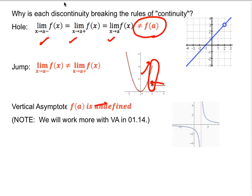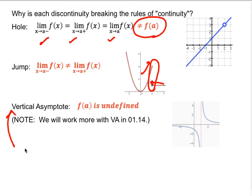And lastly, for a vertical asymptote, f of a is undefined — that instantly breaks the rule. Also, often the left doesn't equal the right. But we're going to talk more about that in Section 14. When we do the Section 14 video, we'll spend more time specifically on vertical asymptotes.